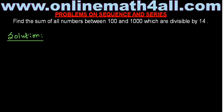I am going to get the first number between 100 and 1000 which is divisible by 14. To find the first number which is divisible by 14 between 100 and 1000, what I am going to do is divide the first number 100 by 14. When I divide 100 by 14, I get 7 times, because 7 times 14 is 98. I get the remainder 2.